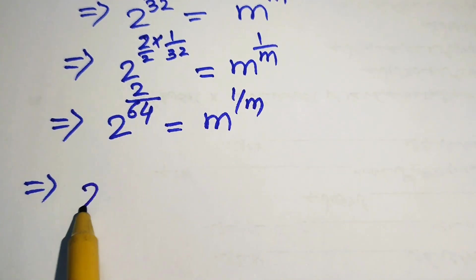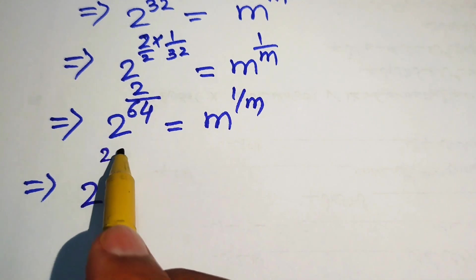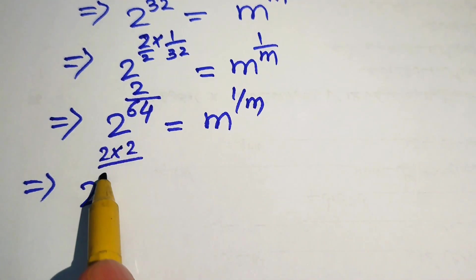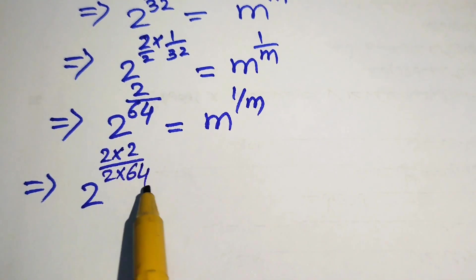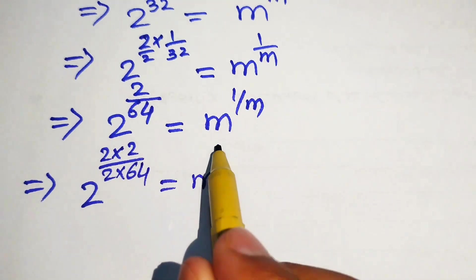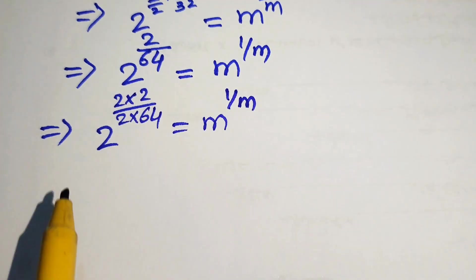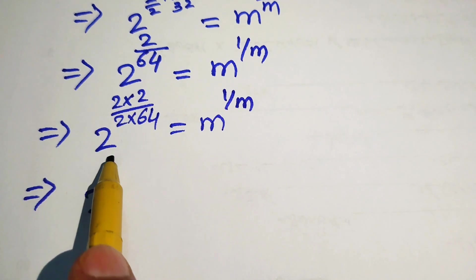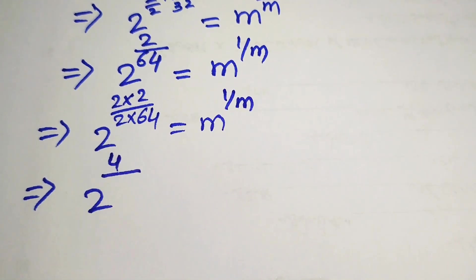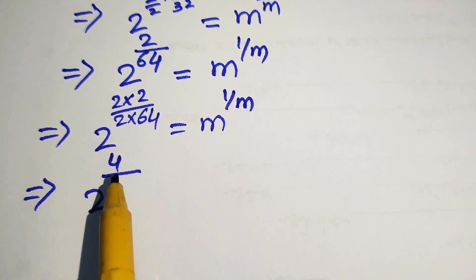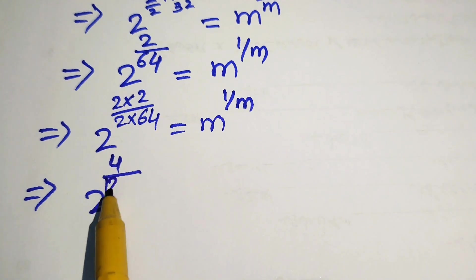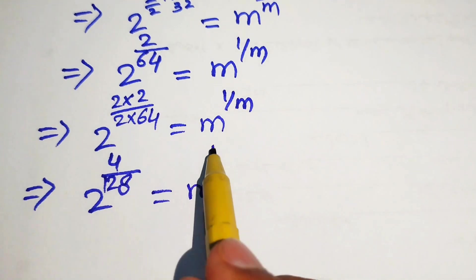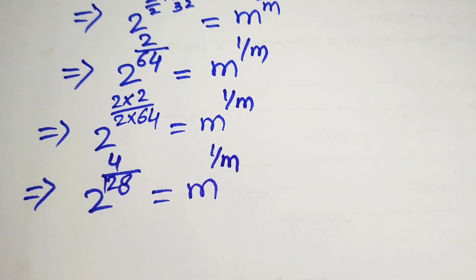We multiply and divide the exponent again by 2, writing the right hand side as it is. On the left hand side we get 2 to the power of 4 over 128, equals m to the power of 1 over m.